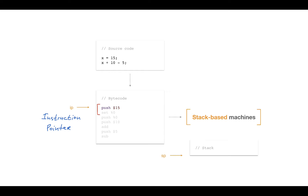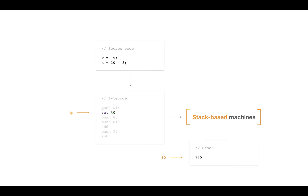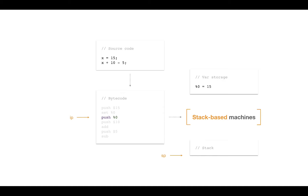The first two instructions correspond to setting the value 15 to the variable x. To set a variable we push the value onto the stack — the instruction pointer then advances to the next operation. The SET instruction sets a global variable, referenced as %0 at the lower level. At this level, named variables like x are mapped to indices in a variable storage, so index 0 maps to x. SET pops the value from the stack and updates the variable storage.